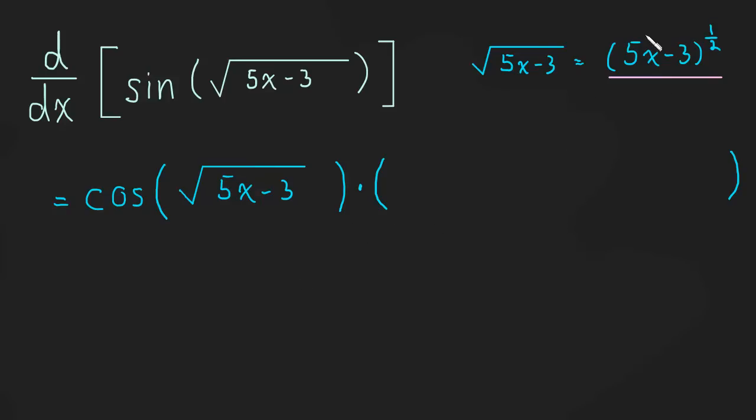So derivative of the outside of this function is going to be one half and then one half minus one is negative one half. Okay, so repeat the new inside, which is five x minus three, times by the derivative of the new inside, which is just five.